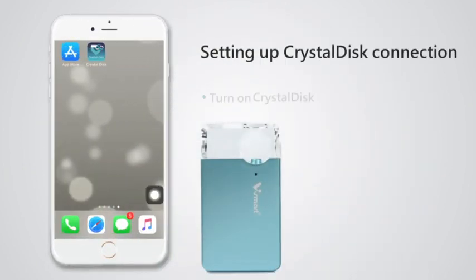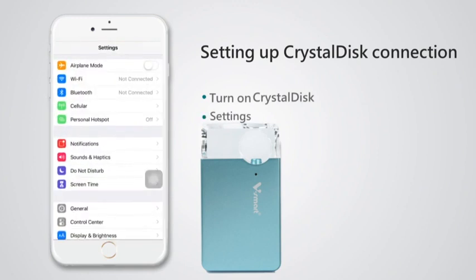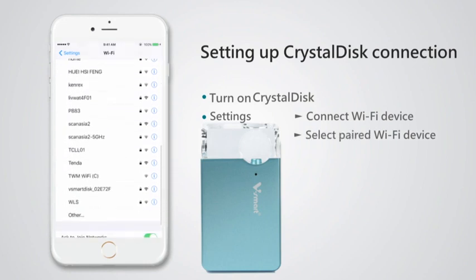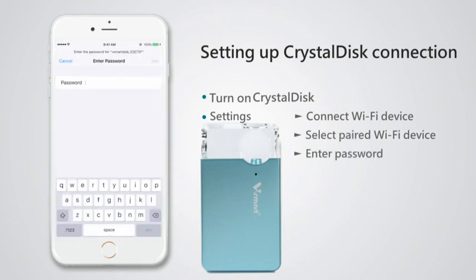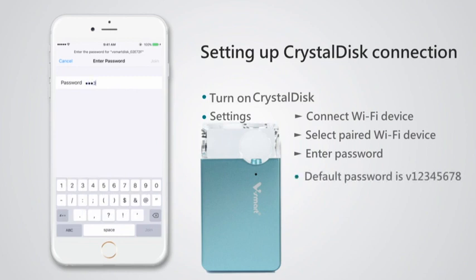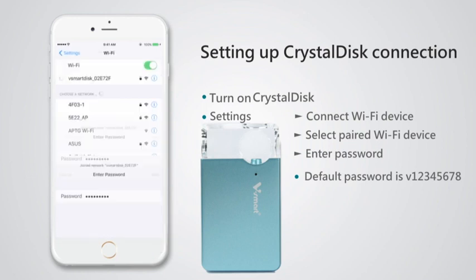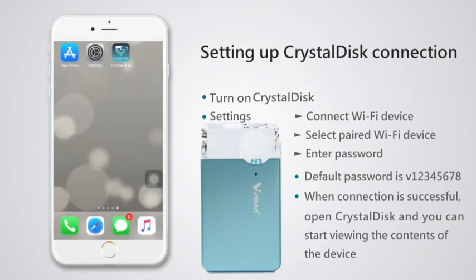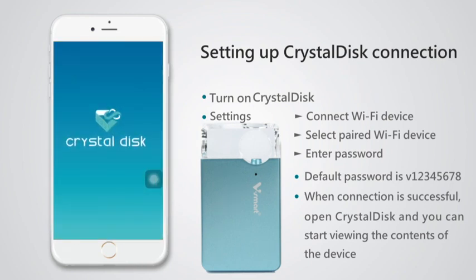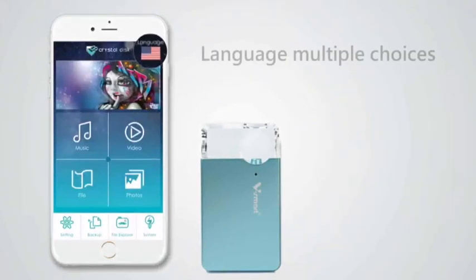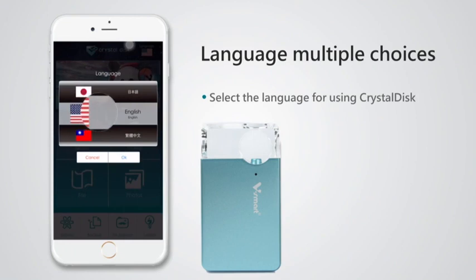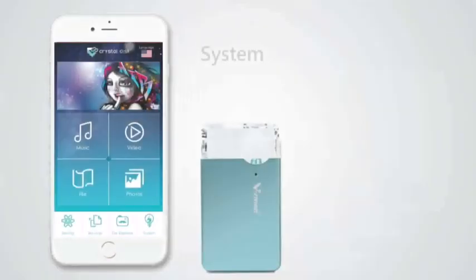Setting up Crystal Disc connection: turn on Crystal Disc settings, connect Wi-Fi device, select paired Wi-Fi device, enter password. The default password is B1234 5678. When the connection is successful, open Crystal Disc and you can start viewing the content of the device. Language has multiple choices — select the language for using Crystal Disc system.